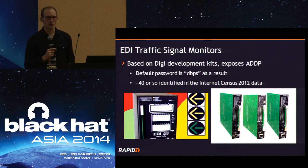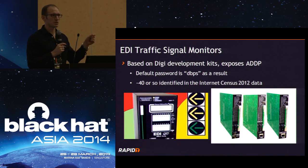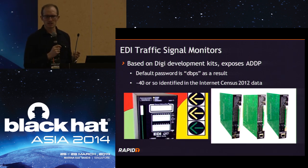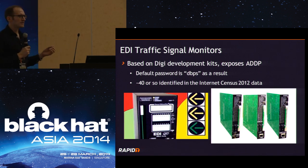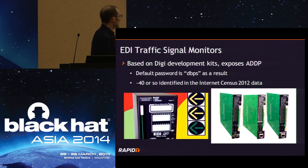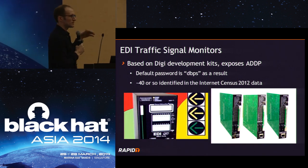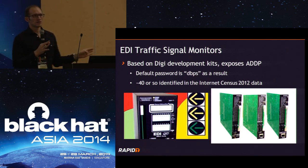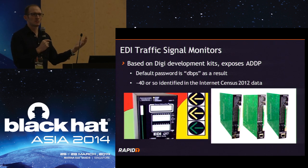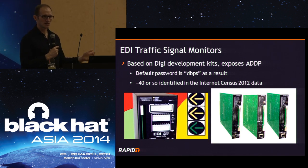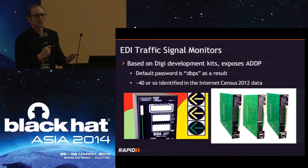You'll find traffic signal monitoring devices. Those give you information about what the traffic lights are doing — yellow, red, whatever — so you can monitor those. In a lot of cases these used Digi development kits, which expose a certain protocol with a default password. There are 40 or so in one dataset. You connect to this device and you're connected to its serial port. The question is — can I see the traffic light? Can I maybe change it to a different state? It always depends from device to device. I'm not saying this is the next big thing, but it's out there and connected to the internet.